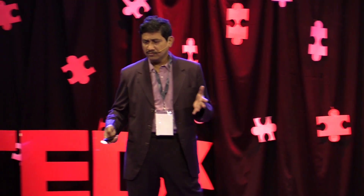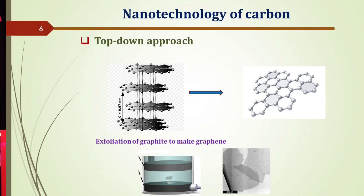There are two approaches. The first is called the top-down approach. We have a large material like graphite, which is naturally available. Can we peel down the layers from this graphite and end up with a single layer called graphene? This is the top-down approach. We take some graphite material and use a process called exfoliation — such as electrochemical or mechanical exfoliation — and end up with graphene, as you can see in the bottom-right structure.